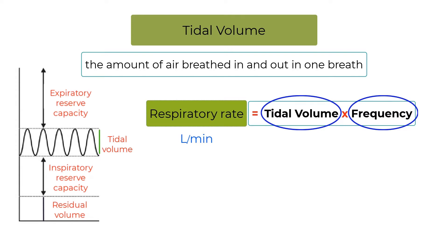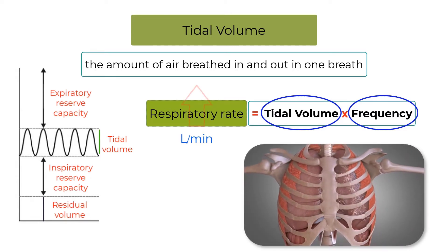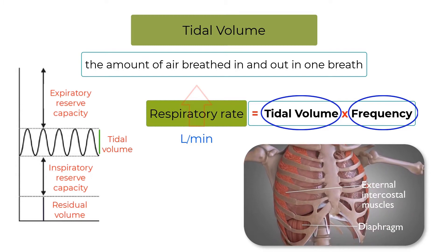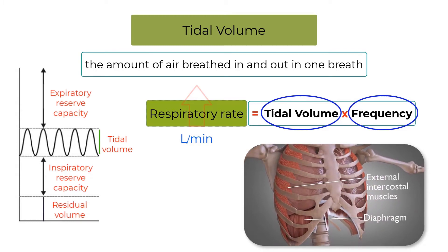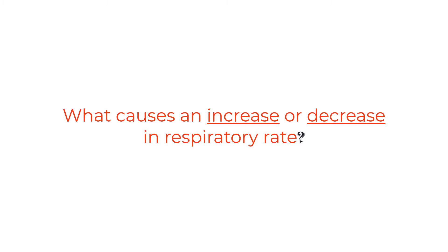When respiratory rate increases, it is possible to recruit chest muscles to enhance the strength of chest expansion and contraction for more forceful breaths and an increased tidal volume. However, increasing the frequency of breaths is also important in increasing ventilation. What causes an increase or decrease in respiratory rate?